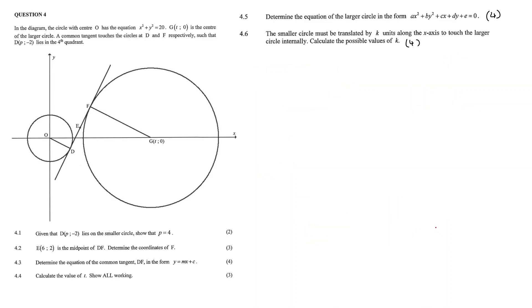Question 4.5: Determine the equation of the larger circle in the form, well, in this form. So for our larger circle, we know that G has the coordinates 20 and 0, and F has the coordinates 8 and 6. We can then use those to find our r squared value, saying 8 minus 20 squared plus 6 minus 0 squared is equal to r squared. And we get our r squared value to be 180.